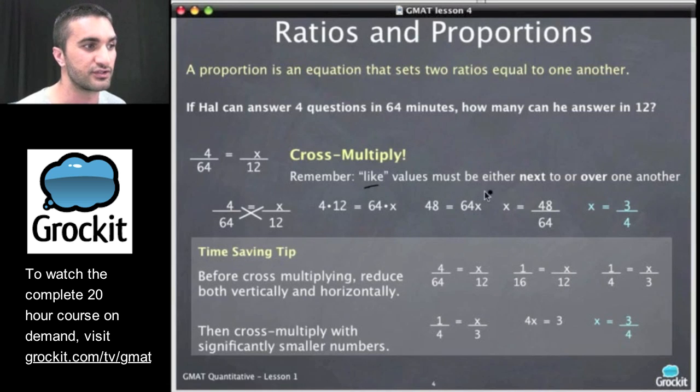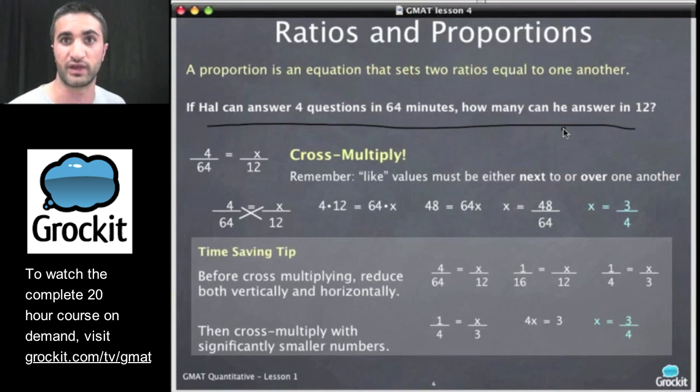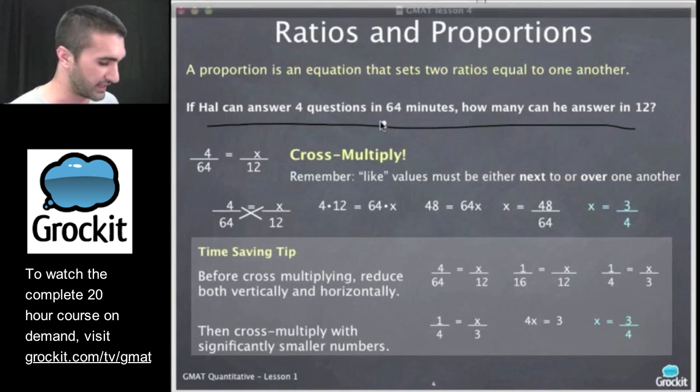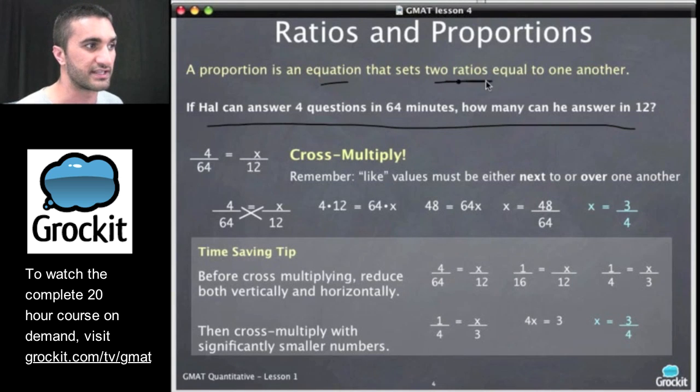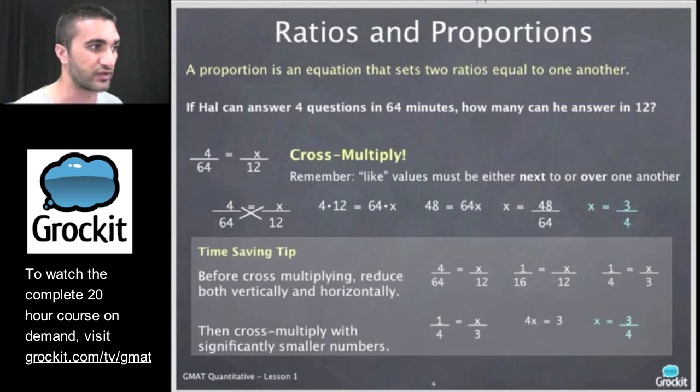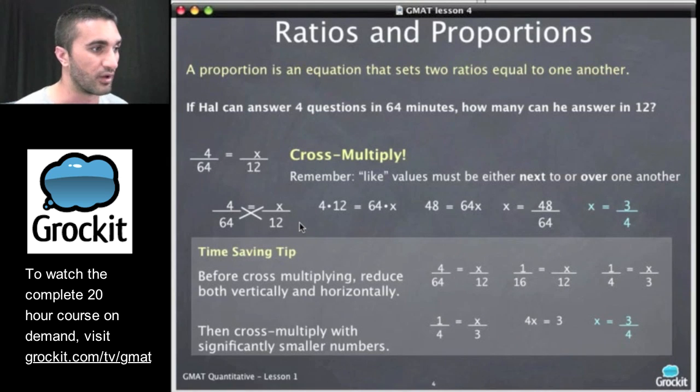So let's cross multiply. Remember, like values must be either next to or over one another. So 64 times X, 4 times 12. We get 48 equals 64X. We divide by 64 on both sides. We get 48 divided by 64, and X equals 3 fourths. So when the GMAT gives us a piece of English, like this, where they give us a ratio, and then a proportion, which we said a proportion, remember, is an equation that sets two ratios equal to each other. That's what we have here. We turn the English into math, and we end up with a relatively straightforward algebraic solution, just cross multiplying.